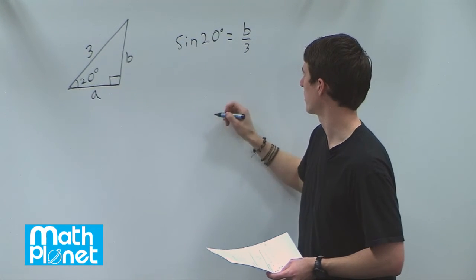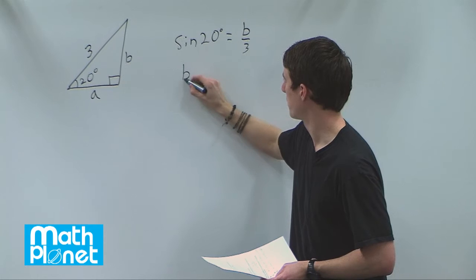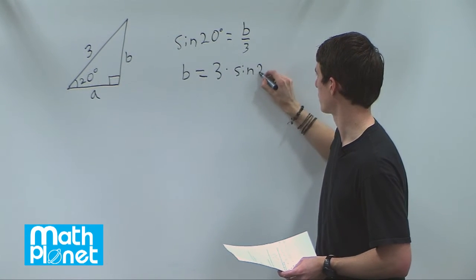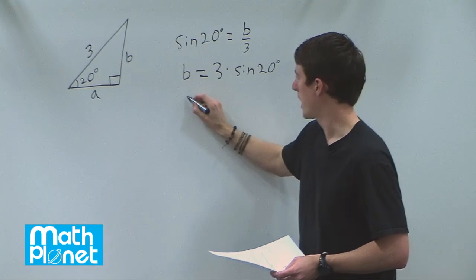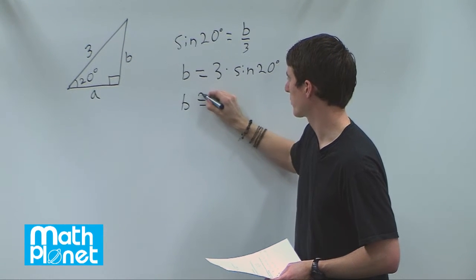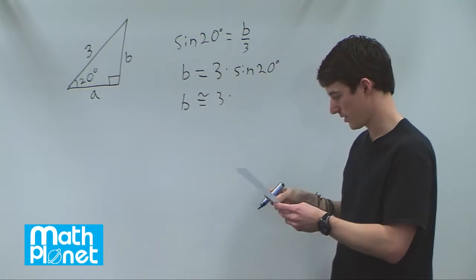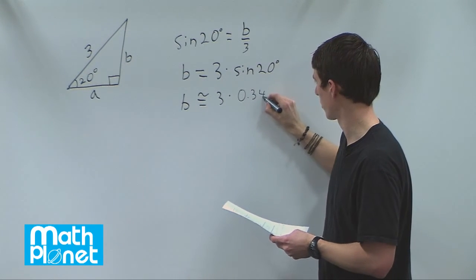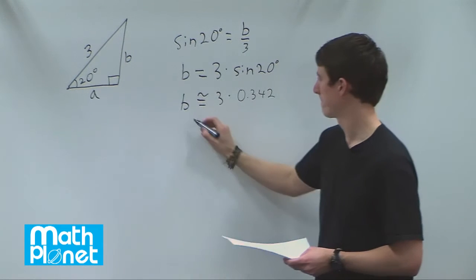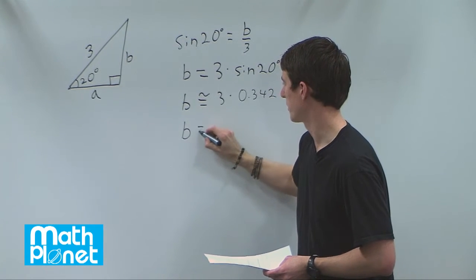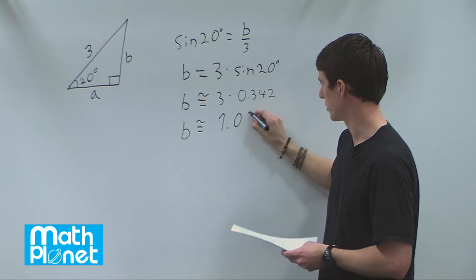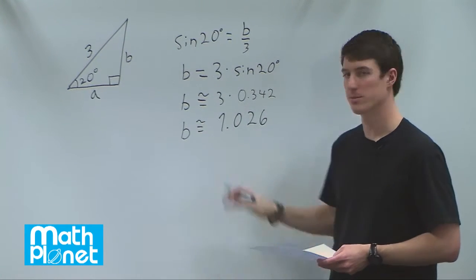we multiply both sides by 3. So we have b is equal to 3 times sine of 20. And that gives us b is approximately equal to 3 times sine of 20, which is 0.342 approximately. So this means that b is approximately equal to 1.026. Great. So we've solved for b.